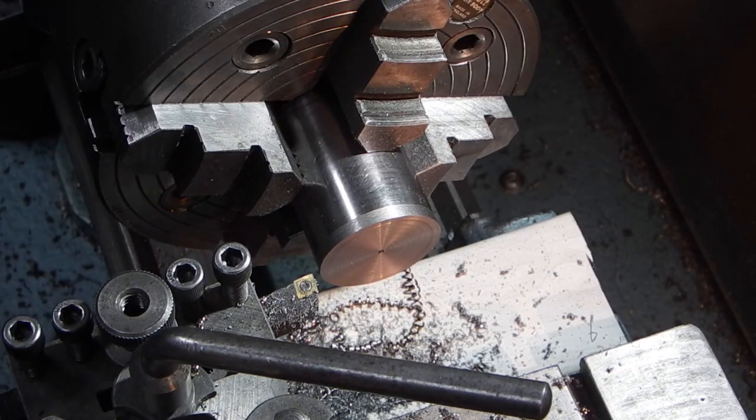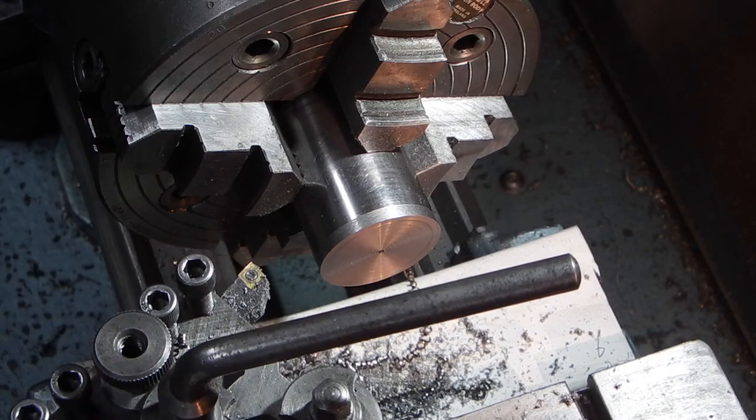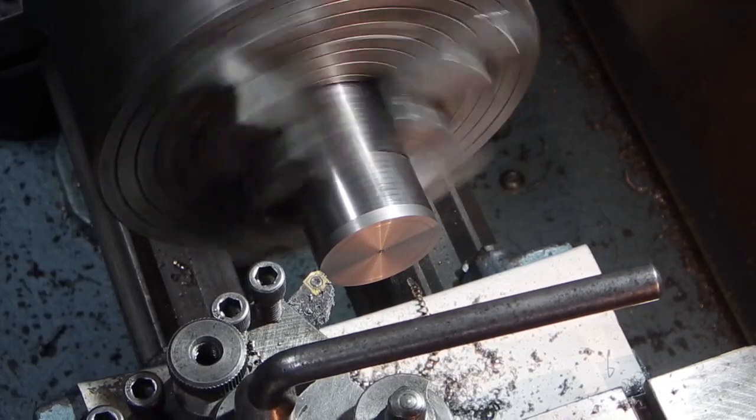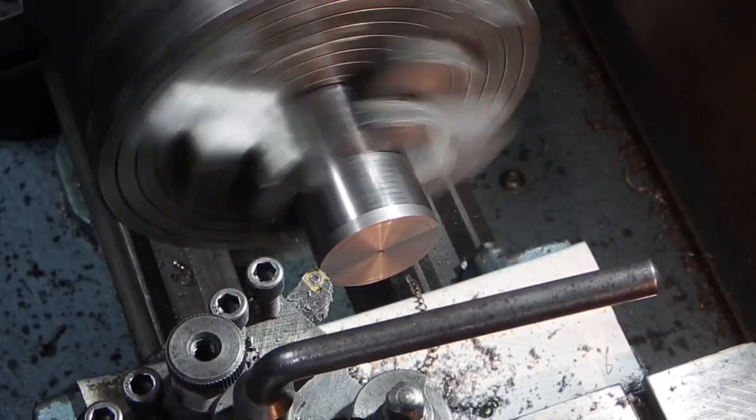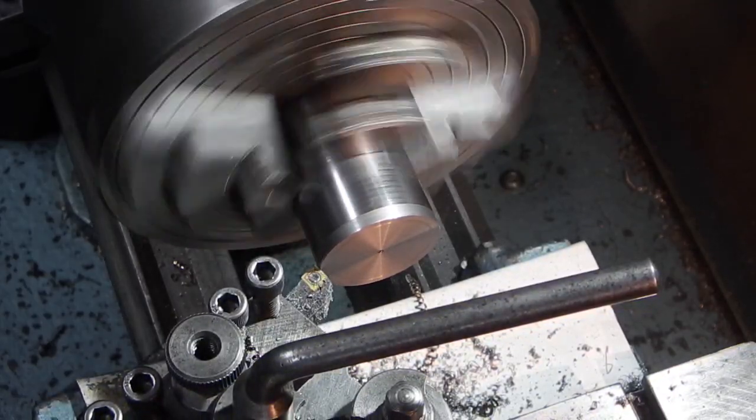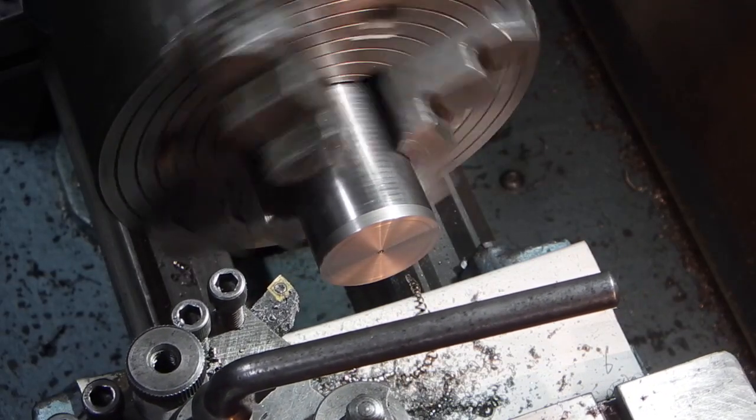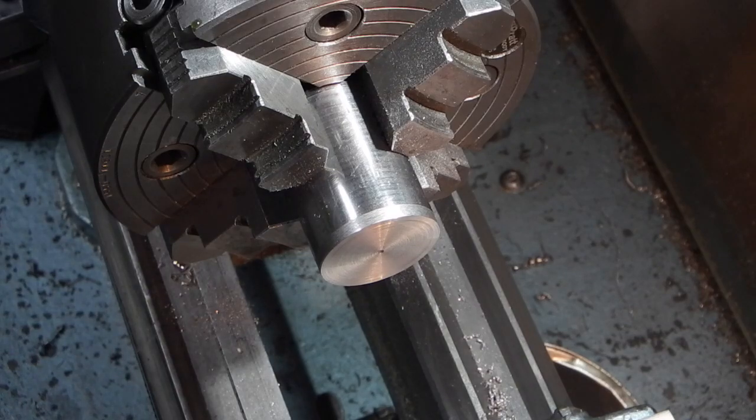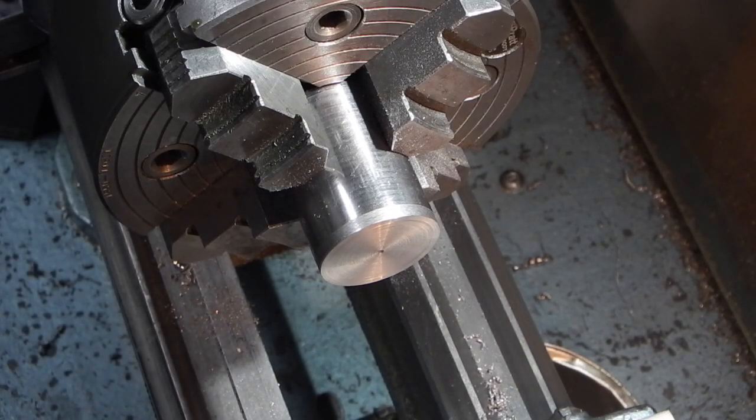I'll just take the corner off. Okay now that's ready to be offset. What I need to do to offset this is put my dial indicator in the tool holder.